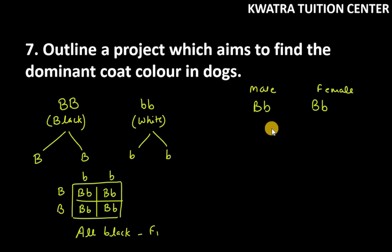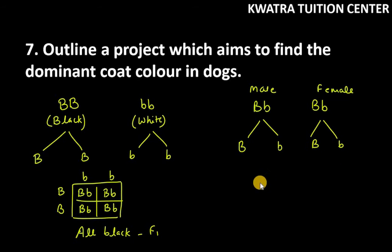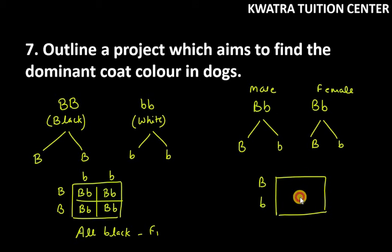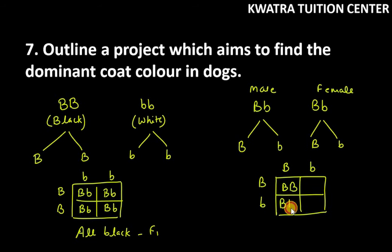Now let's see how recessive traits will appear. Here we will take small b, capital B — so Bb crossed with Bb. Now let's make a cross with respect to male dog and female dog. So again capital B and small b. The results are: capital B capital B, capital B small b, capital B small b, and small b small b.